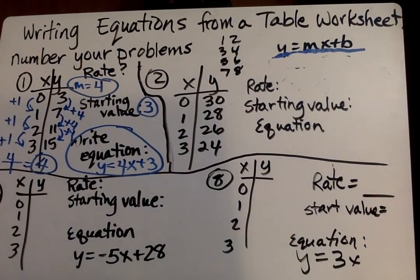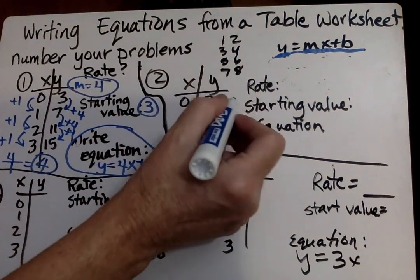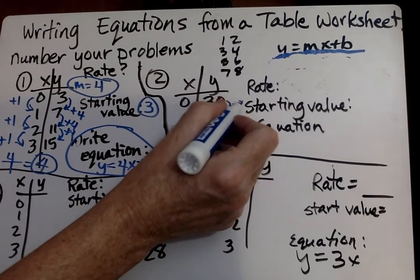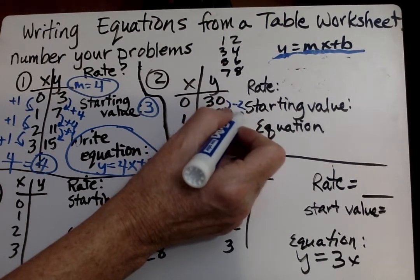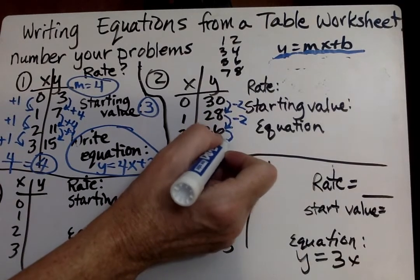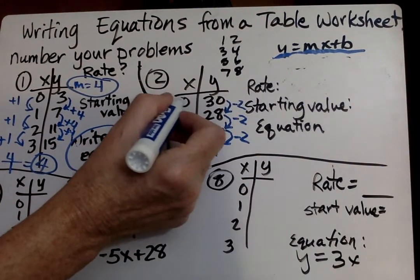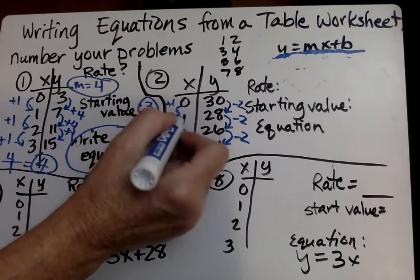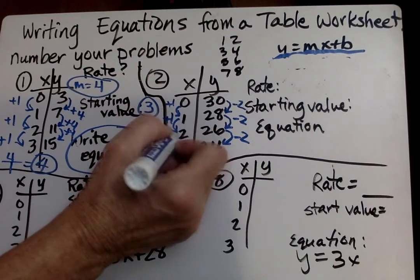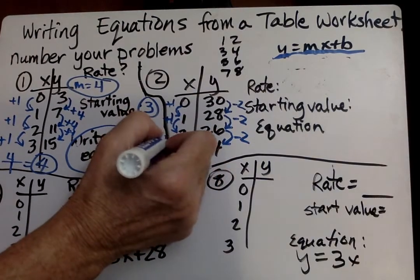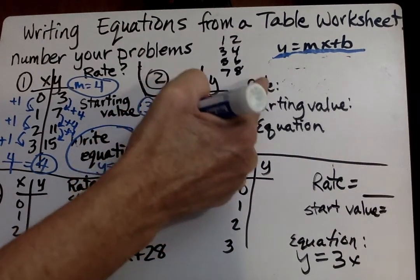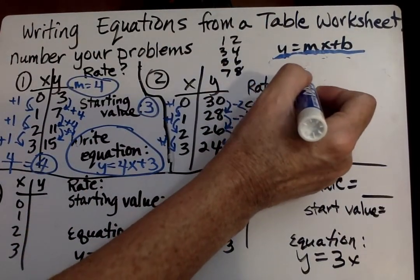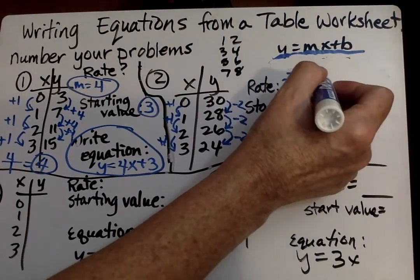Now we're going on to number 2. Let's figure out the rate. How do you go from 30 to 28? Minus 2. 28 to 26, minus 2. 26 to 24, minus 2. Then this side, how do you go from 0 to 1? Add 1. And we see that we add 1 every single time. And we put this number over this number to get our rate, or rate of change. So that's negative 2 over 1, and we simplify it if we can, to negative 2.